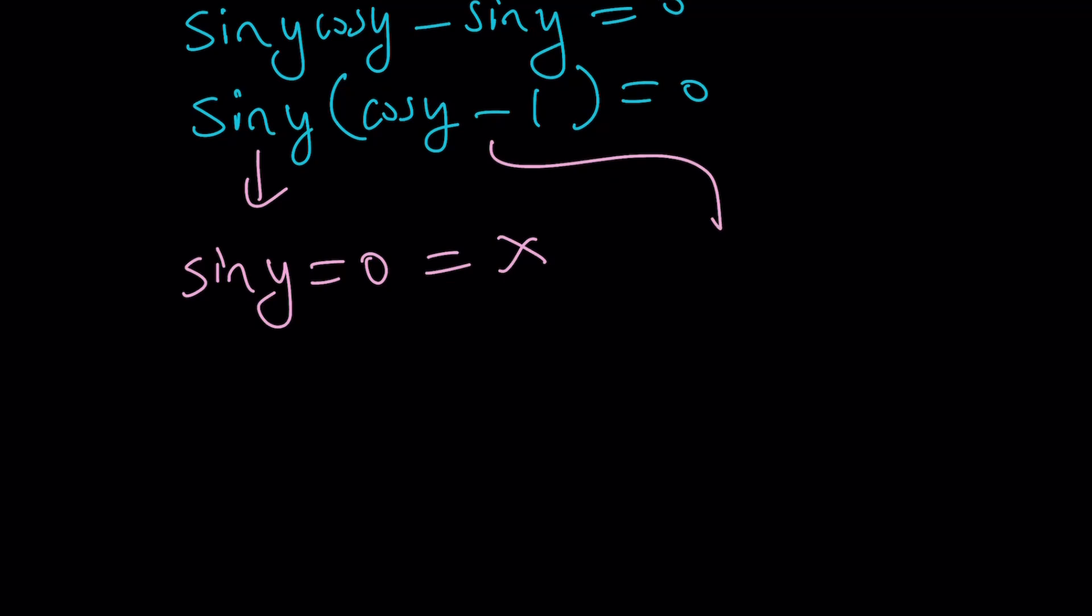What about the other one? The other one gives us cos y equals one. And remember, sin squared plus cos squared is equal to one. So this implies that sin y is equal to zero, which is the same thing as x equals zero. So both of these equations point to the same thing, x equals zero. And that seems to be the only solution.